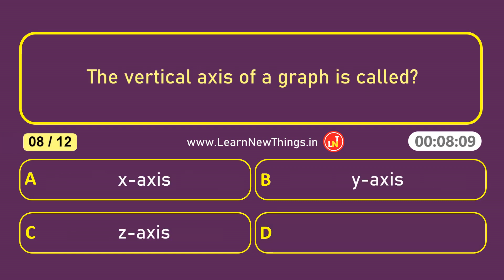The vertical axis of a graph is called the Y axis.